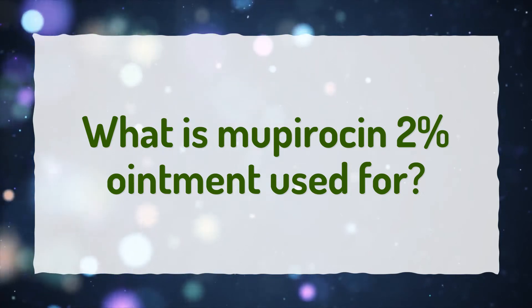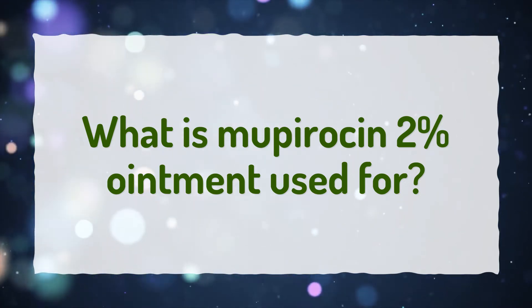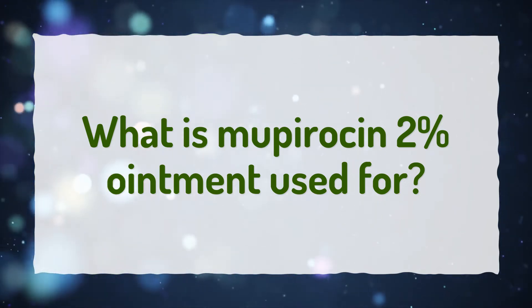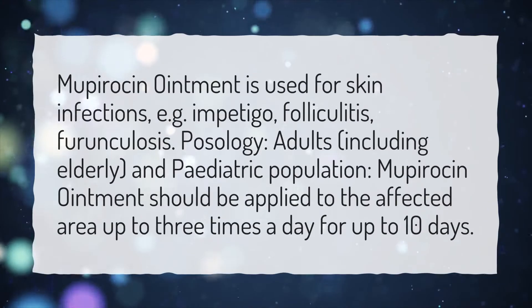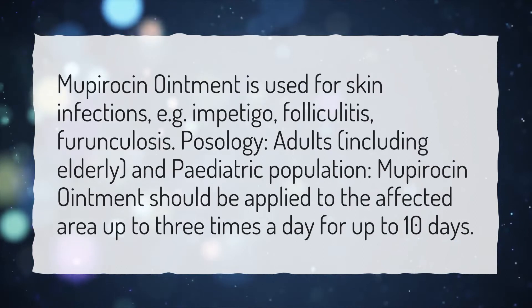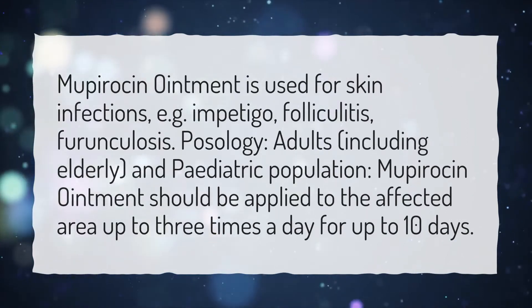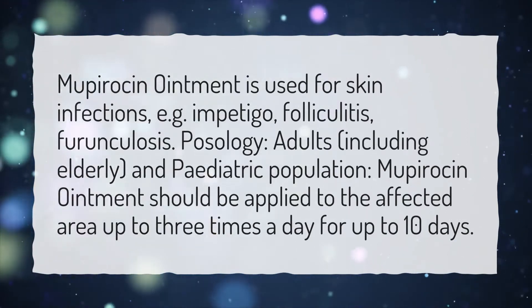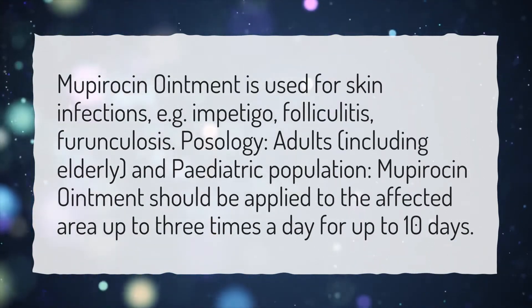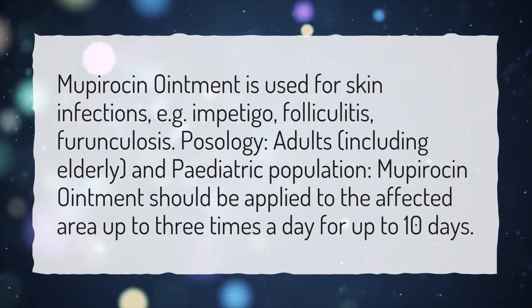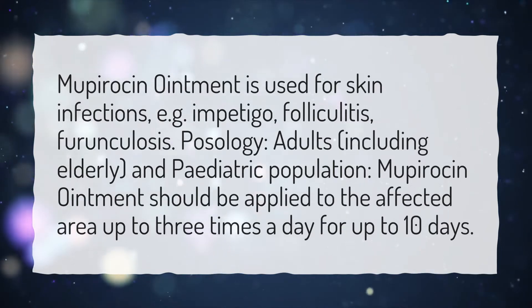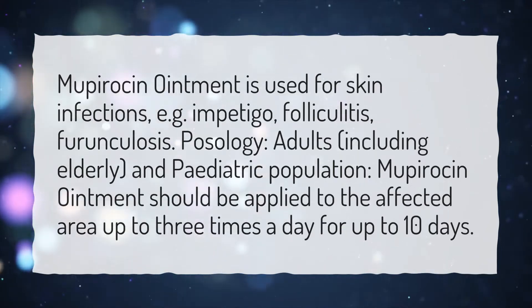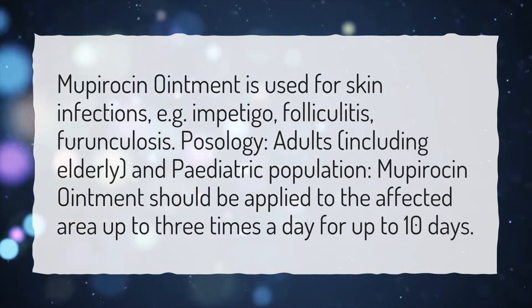What is Mupirocin 2% ointment used for? Mupirocin ointment is used for skin infections, e.g. impetigo, folliculitis, furunculosis, pathology.